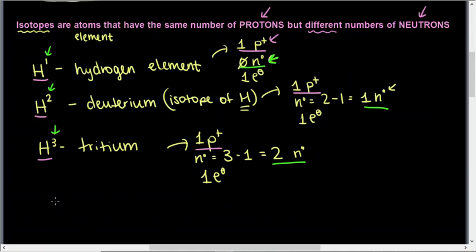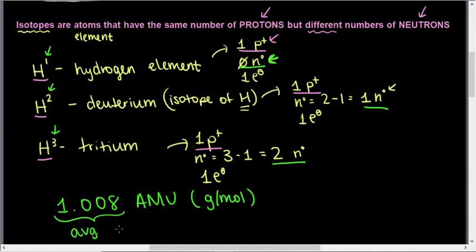When we're looking at the atomic mass of hydrogen on the periodic table - 1.008 atomic mass units, which is the same as grams per mole - this is the average mass of all isotopes based on abundance. That's why it's a decimal.